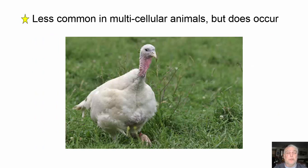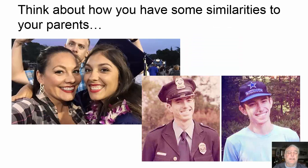Asexual reproduction is less common in multicellular animals, but it does occur. For example, turkeys can sometimes lay fertilized eggs even without a male, and those eggs will give birth to new turkeys — they're always going to be female turkeys. Pretty interesting.